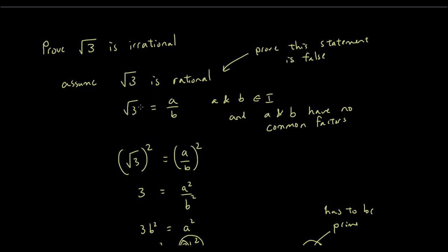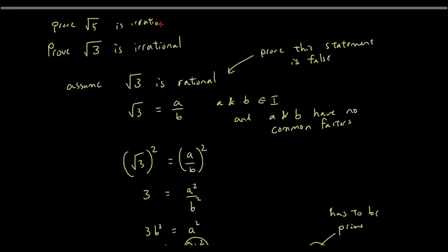You can repeat this problem — for example, prove square root of 5 is irrational, square root of 2, square root of 7. You can do the same working. So hopefully it's just a matter of memorizing this and writing it out on the test. Thanks for watching guys, see you next time.